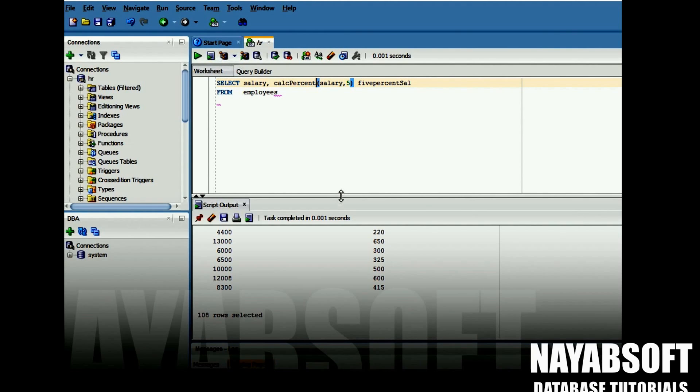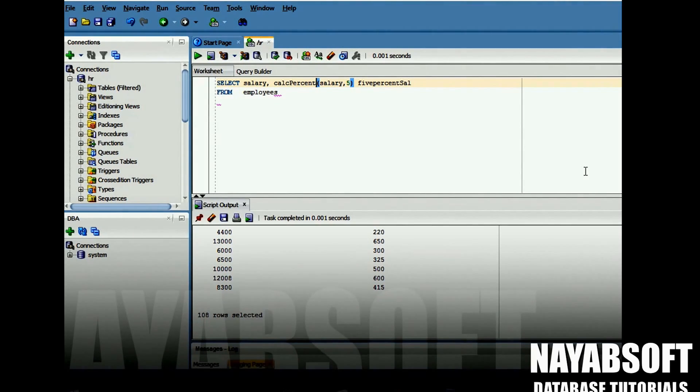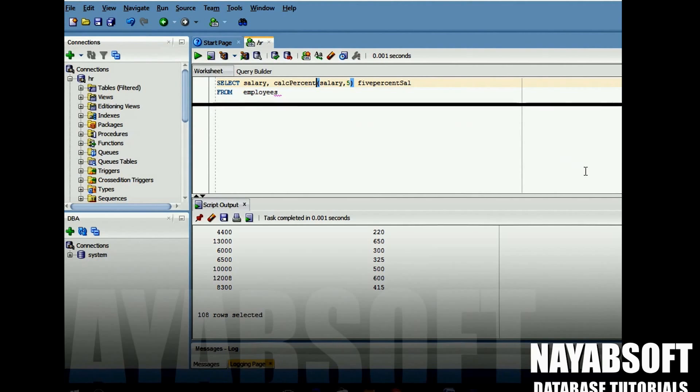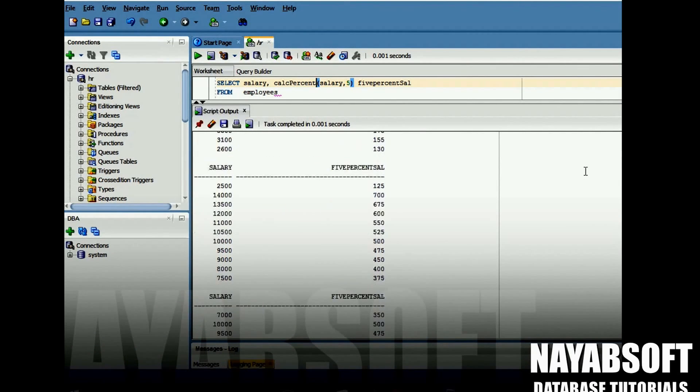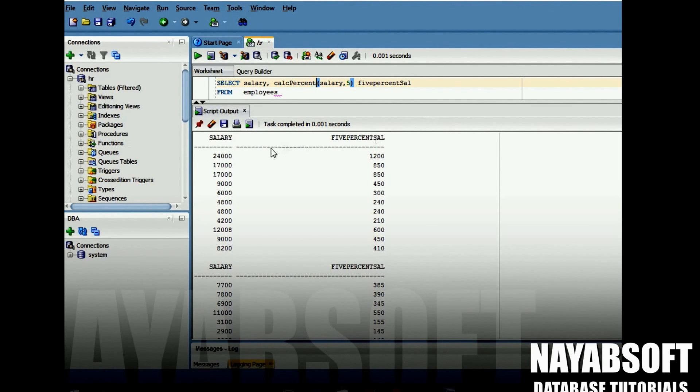In the result you can see the salary as well as the column which is calculating 5% of the salary by using the calcPercent function.